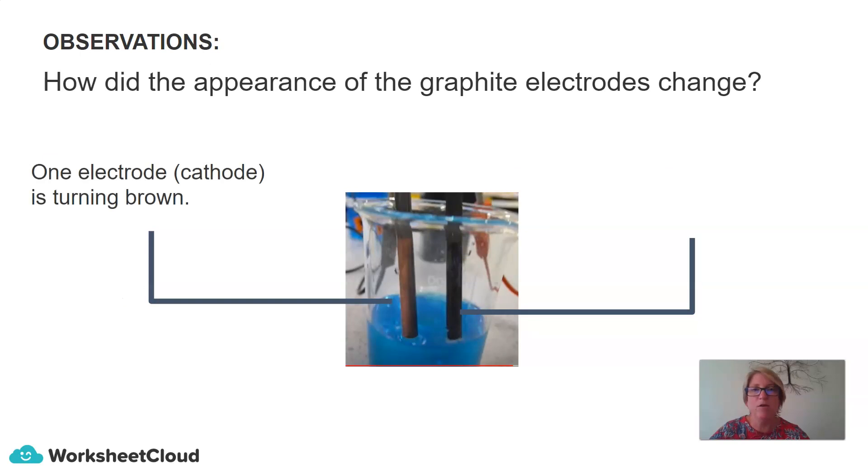So how did the appearance of the graphite electrodes change? For one electrode, the cathode turned brown, and the other electrode, the anode, is still a dark gray.